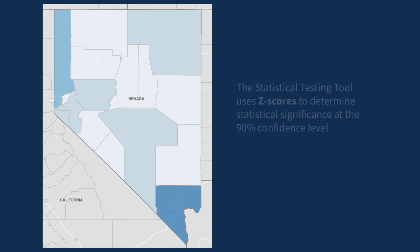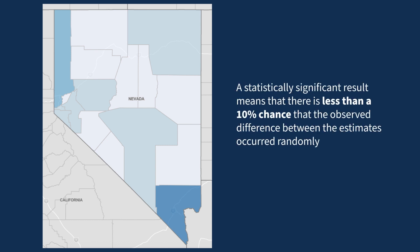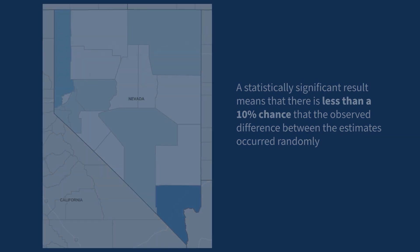The tool uses z-scores to determine statistical significance at the 90% confidence level. A statistically significant result means that there is less than a 10% chance that the observed difference between the estimates occurred randomly.